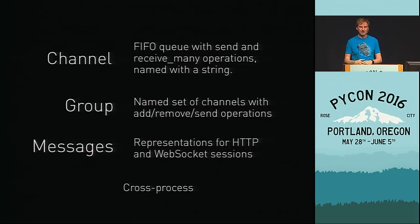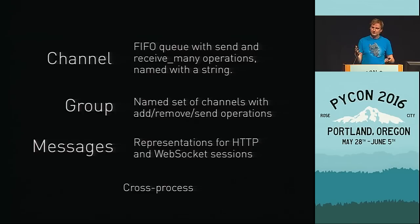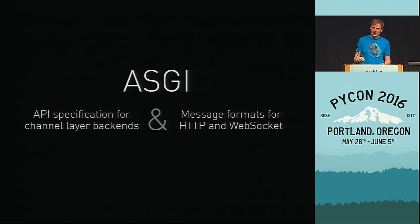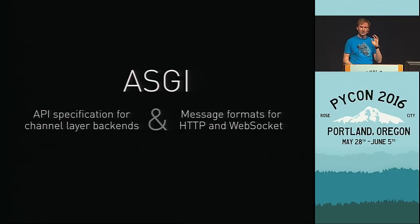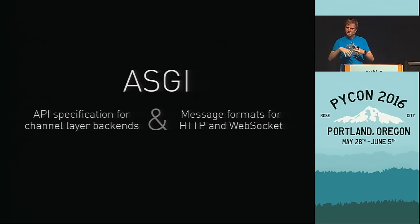This is where ASGI comes in. ASGI is the underlying specification that drives channels. It is two things: a specification for what an object looks like that lets you transport things — those five functions I showed you earlier — and it specifies the message formats you transport over it. Combined, you have common code that understands it opens the backend, receives on http.request, and knows what to expect in terms of message format. And there are three different versions of the underlying layer: the Redis layer which works across an entire system of machines; the POSIX IPC backend using shared memory segments for different processes on one box; and an in-memory backend for single-process or testing.